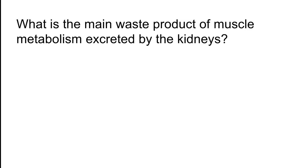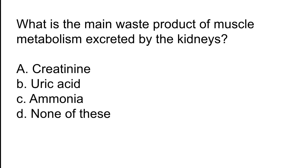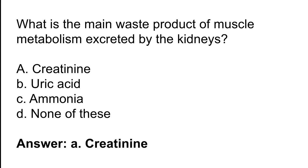What is the main waste product of muscle metabolism excreted by the kidneys? Options: A) Creatinine, B) Uric acid, C) Ammonia, D) None of these. The correct answer is option A. Creatinine is the main waste product of muscle metabolism excreted by the kidneys.